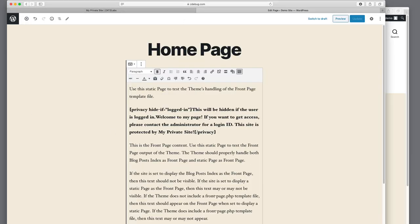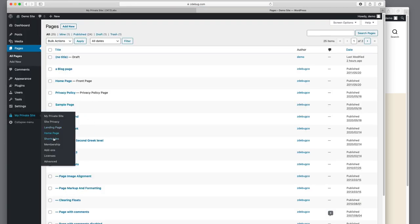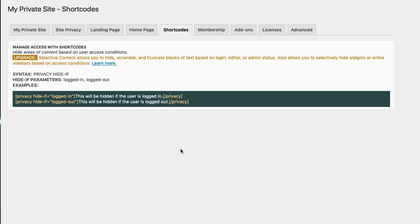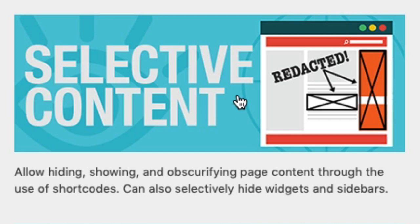In My Private Site, there are also a whole bunch of other options available in the Selective Content add-on. The Selective Content add-on has the ability to hide content not only based on whether you're logged in or logged out, but also based on whether you're an administrator or an editor. It allows you to truncate information, scramble information, or — my favorite — replace it with lorem ipsum. It also lets you selectively hide widgets and sidebars based on access level.